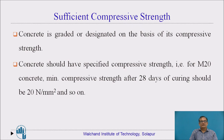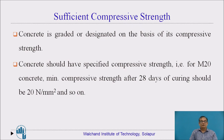Sufficient compressive strength is also equally important. Concrete is graded or designated on the basis of its compressive strength — for example, M20 and M30 grades. M stands for mix, and the number stands for characteristic compressive strength in Newton per mm square. For M20 grade concrete, the strength after 28 days of curing should be a minimum of 20 Newton per mm square.